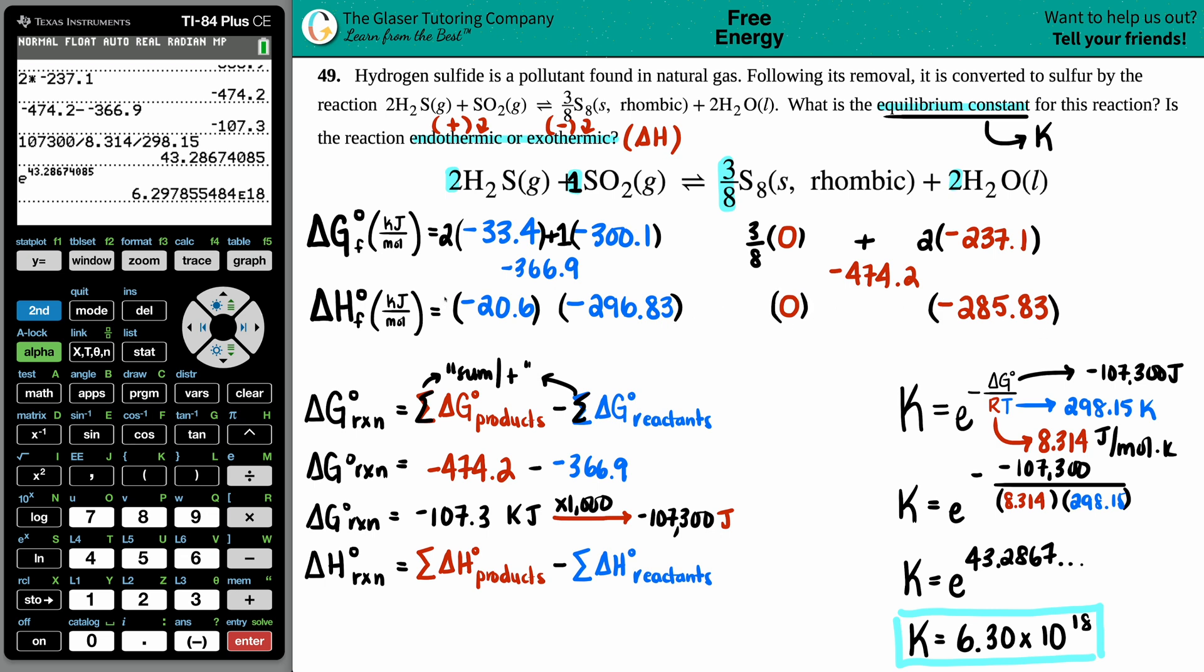I'm going to times the -20.6 by 2, times the other one by 1, 3/8 times 0, and then 2 times -285.83, and I have to add them together. Let's do the reactants first: 2 times -20.6 minus 296.83, and that looks good. The reactant side total would be -338.03, and the product side would be 2 times -285.83, so total on that side would be -571.66.